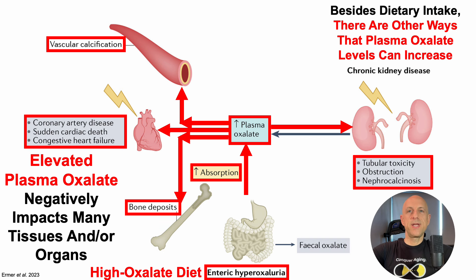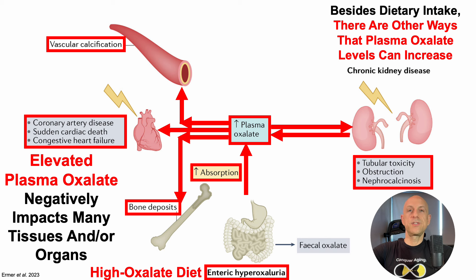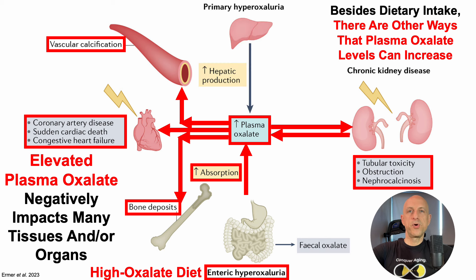But besides dietary intake, there are other ways that plasma oxalate levels can increase. One way is with poor kidney function — and note that kidney function declines during aging — which would limit the kidneys' ability to remove oxalate from the blood, thereby increasing plasma levels. In addition, the liver produces oxalate, and there are specific gut bacterial species that can degrade it.